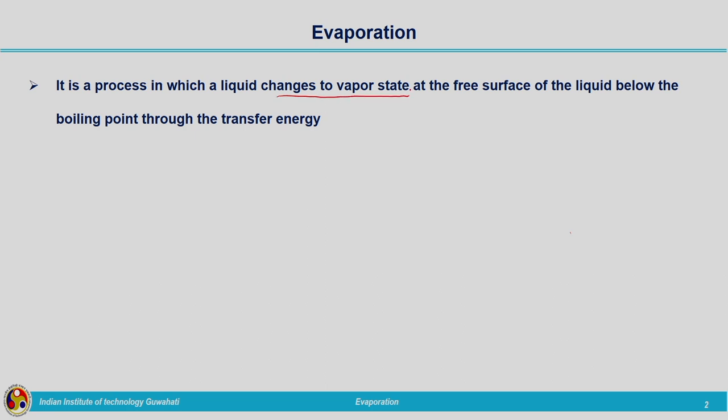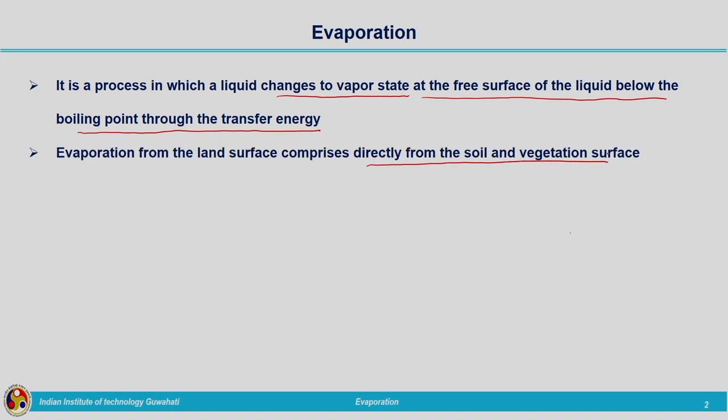Coming to the definition of evaporation: it is the process in which liquid changes to vapor state at the free surface of liquid, below the boiling point, through the transfer of energy. This conversion of water to vapor takes place within the water body and also near land surfaces. Evaporation from the land surface is mainly from the soil layer and also from vegetative cover.